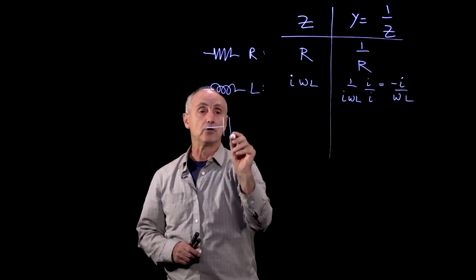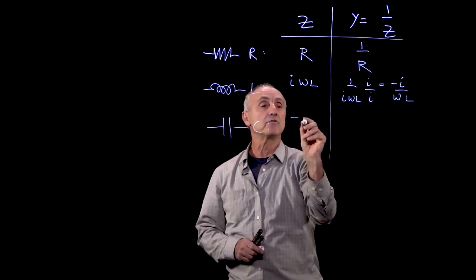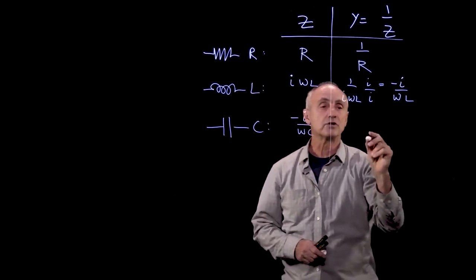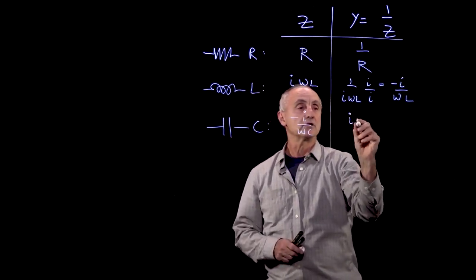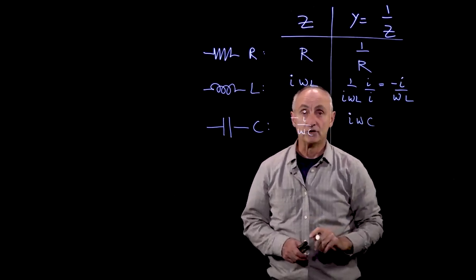Our capacitor element C had an impedance of minus i over omega C. When I invert this complex number, it's a nice little exercise for you to do, I get i omega C.